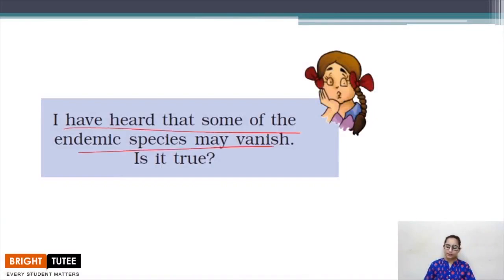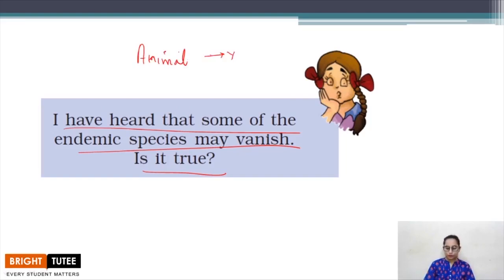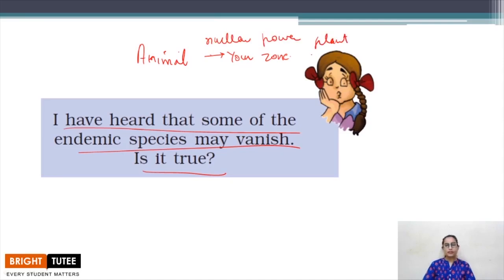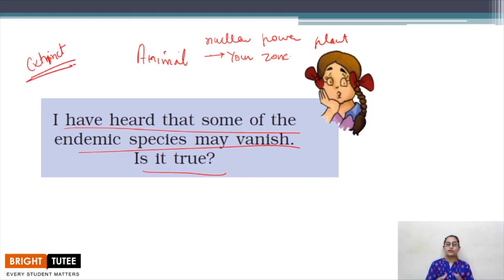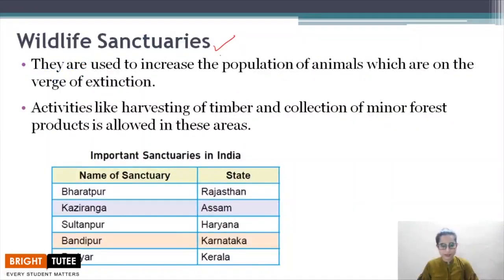Some endemic species may vanish. If an animal is endemic to your zone and the government decides to construct a nuclear power plant in that area, the forest habitat will be acquired. With no habitat, these species will not be able to flourish and may become extinct. Yes, endemic species can also vanish someday due to human activities.